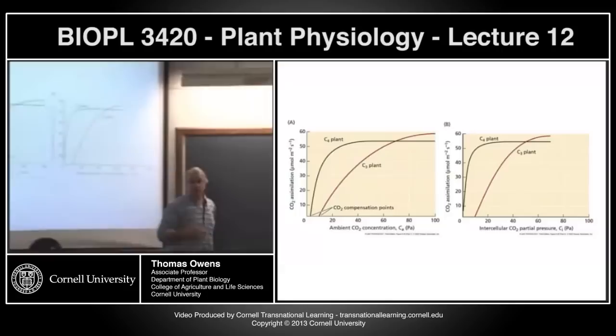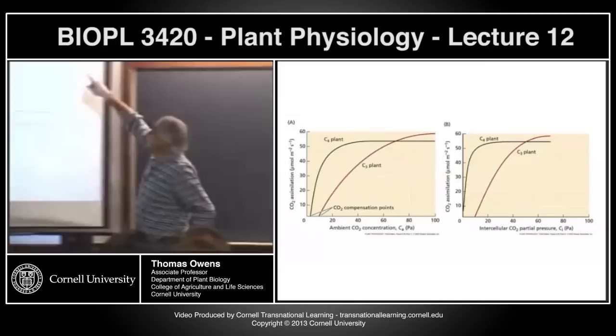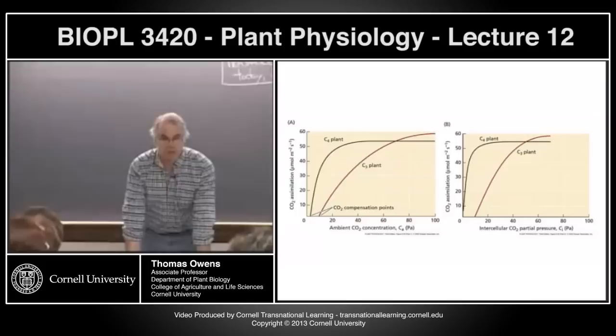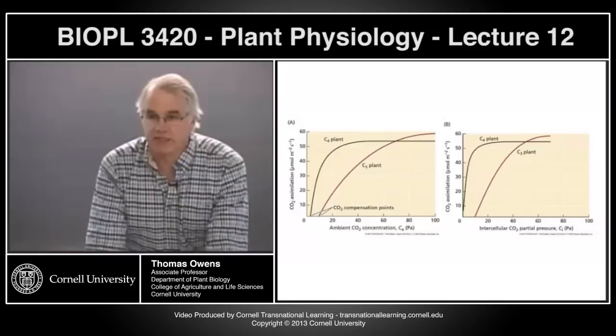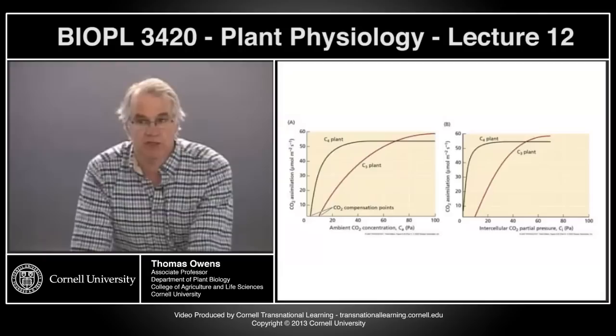The last thing we left off with was talking about the fact that at high CO2, C3 plants actually do more photosynthesis than C4 plants. Why is it that at high CO2 concentrations, C3 plants can do more photosynthesis than C4 plants?